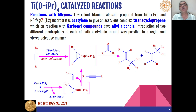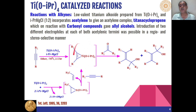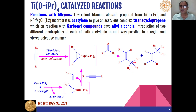The most common reaction of titanium tetra-isopropoxide is with alkynes. When titanium tetra-isopropoxide in combination with a Grignard reagent is reacted with alkynes, they generally give an acetylene complex called titanocyclopropene. This type of complex, on reaction with carbonyl compounds, can give different types of allylic alcohols as the product, and these reactions are very regio- and stereoselective in nature.